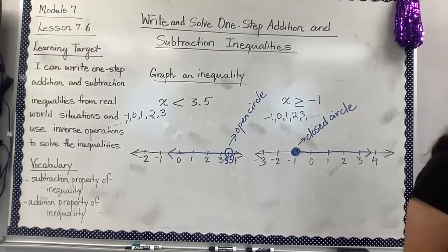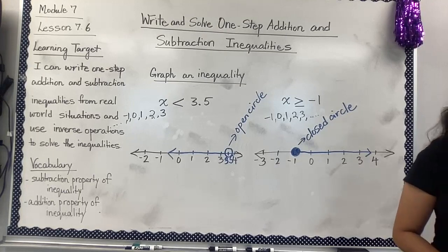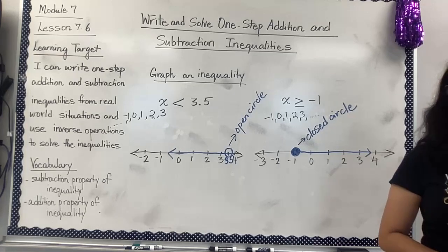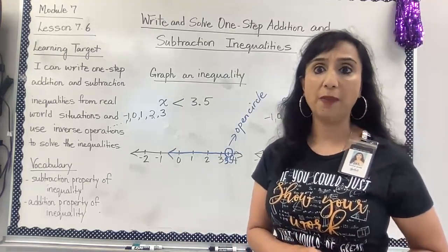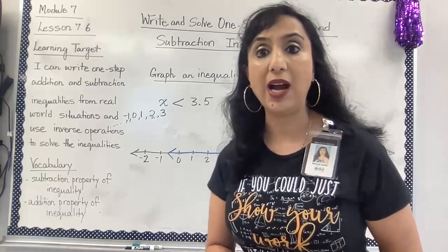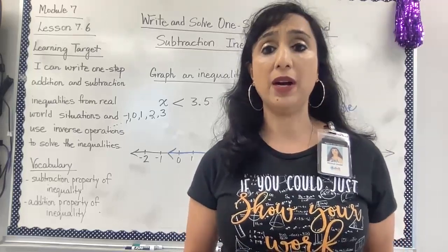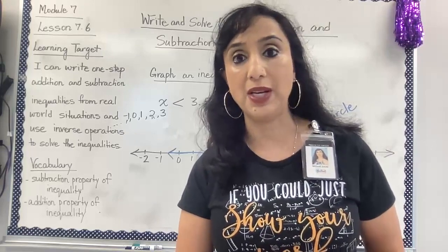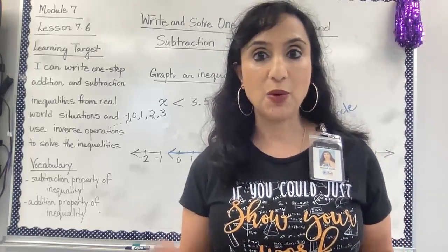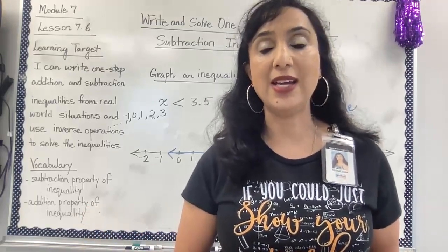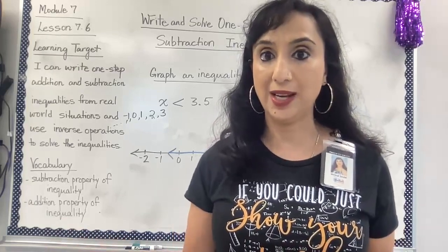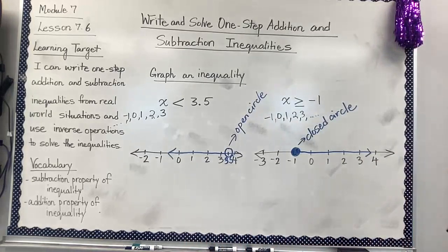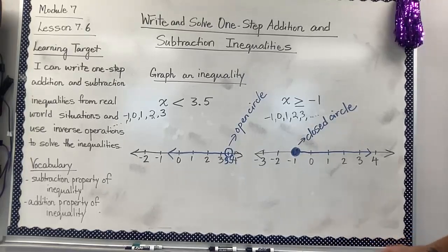Solving an inequality means finding the values for the variable that make the inequality true. We use the subtraction or addition property of inequality, which means adding or subtracting the same number from both sides — just like we did with equations, but now it's an inequality.